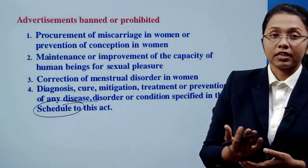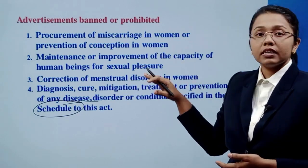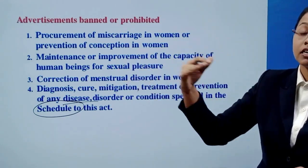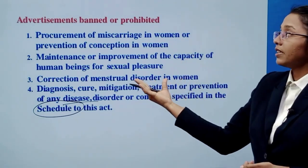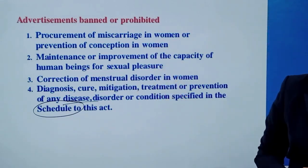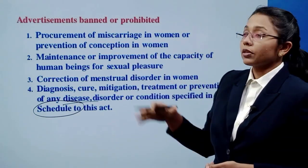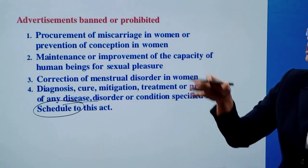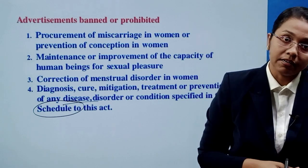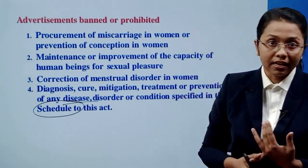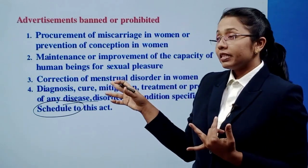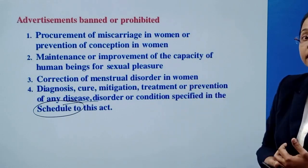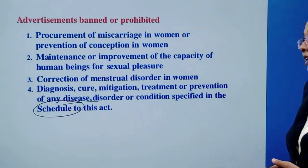Some specific prohibited categories include: the correction of menstrual disorders — that is not legal to advertise. The maintenance or improvement of the capacity of human beings for sexual pleasure is also prohibited. The procurement of miscarriage in women is also illegal. These are advertisement bans under this act.